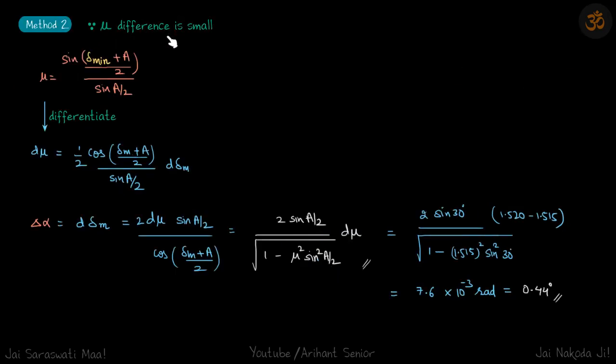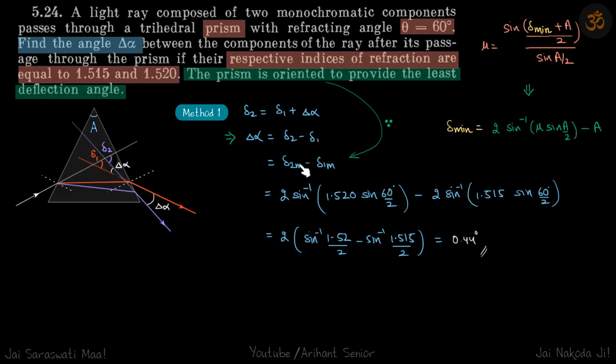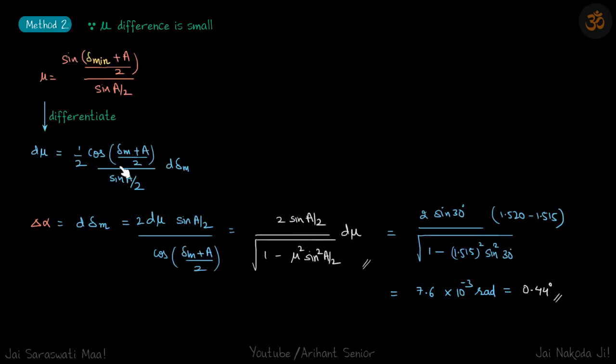So since mu difference is small, we'll just differentiate this, we'll get D mu is equal to this quantity. And from here we can write D delta M, we have already seen that D delta M is delta alpha. So we'll put D delta M as delta alpha.